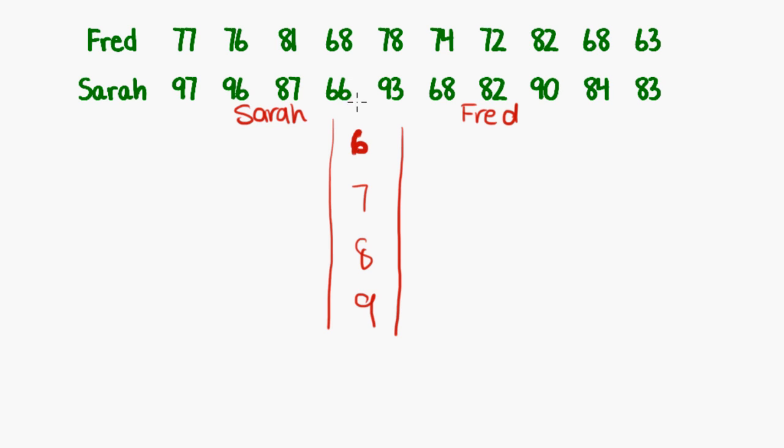So Fred, did he have anything that started with a six? Well, there was a 68 and there was another 68 and a 63. What about the sevens? We had a 77, a 76, 78, 74, 72 and that's it. And then there was an 81 and an 82 and nothing in the nines. So we just leave that blank. If you have in a stem plot no particular occurrences for a particular stem, you just don't put any leaves for that line, leaves I should say.